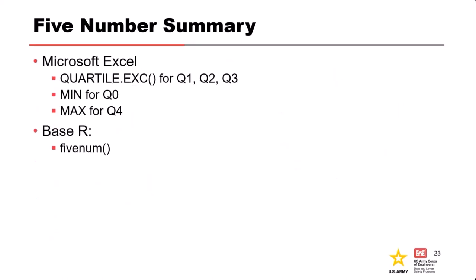In Excel, use the QUARTILE function to get Q1, Q2, and Q3 (25th, 50th, 75th percentiles), or the MEDIAN function for Q2. For the minimum and maximum (Q0 and Q4), use the MIN and MAX functions because the QUARTILE.EXC function doesn't work at 0 or 100. In base R, the fivenum function provides all five numbers of the five-number summary.